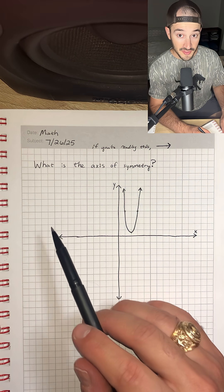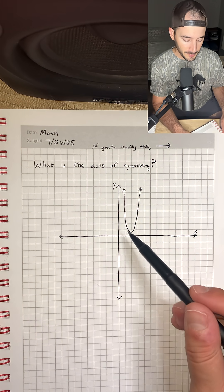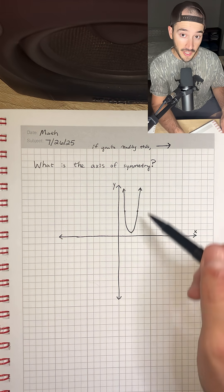Can you do this algebra one problem? So the problem says, what is the axis of symmetry? We're given a parabola, which is just a curved graph like this,